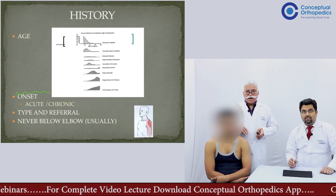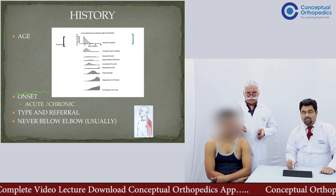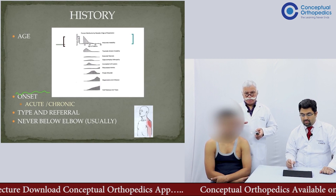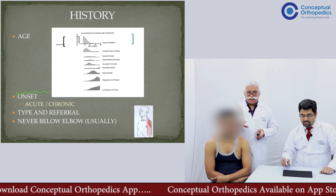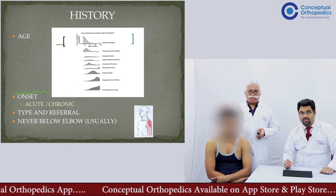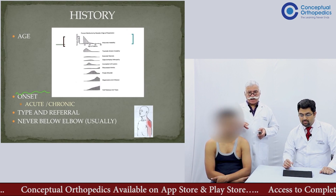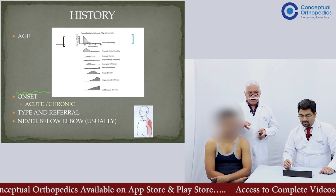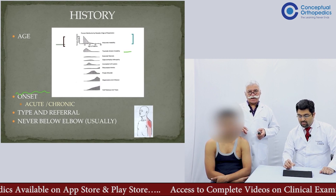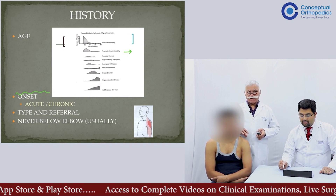In the history, one must find the age of the patient, as certain pathologies present at certain ages. One usually sees dislocation problems in younger age and cuff-related problems in the later stage of life. When a dislocation occurs in a 15-year-old, it can be atraumatic — and that is an important point to find out when a dislocation presents at a very young age of 15 years.